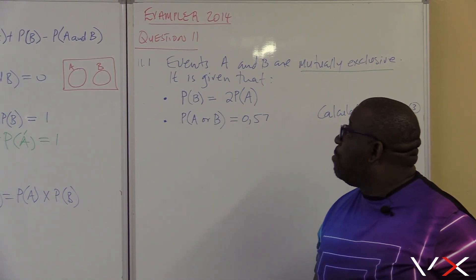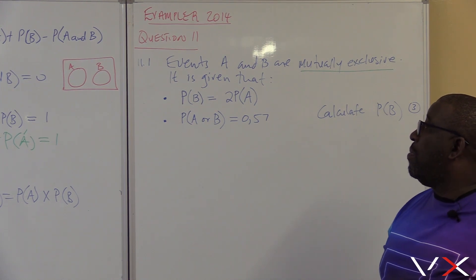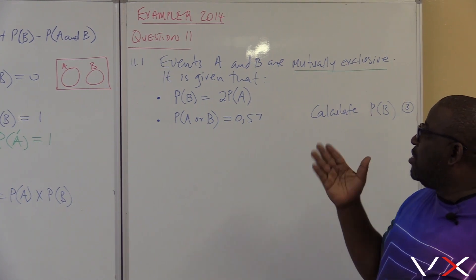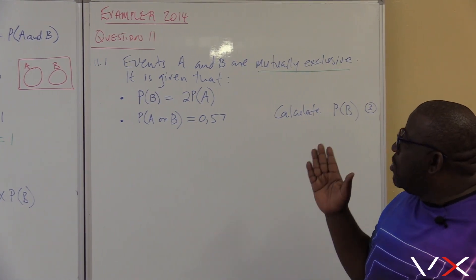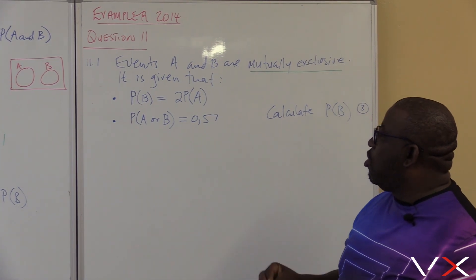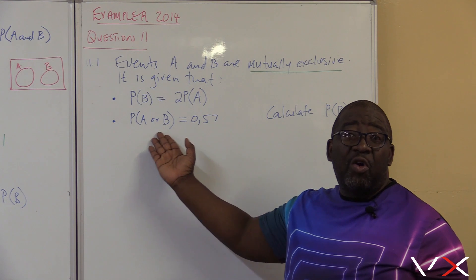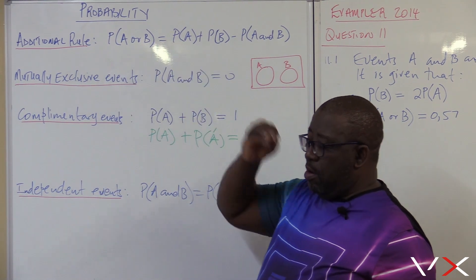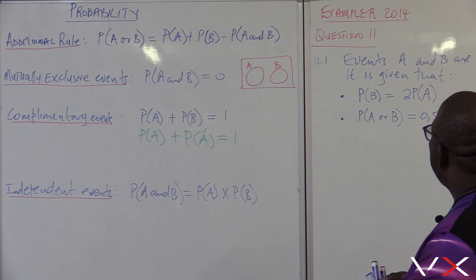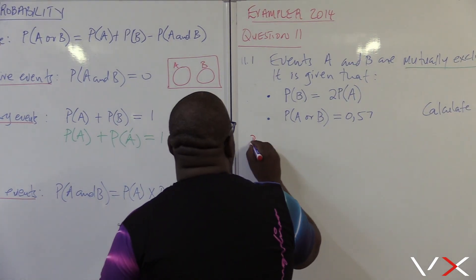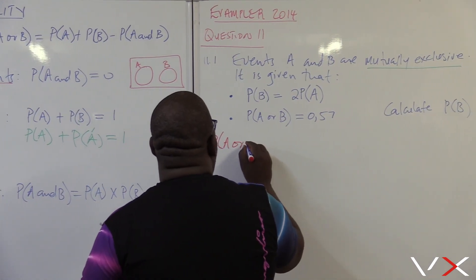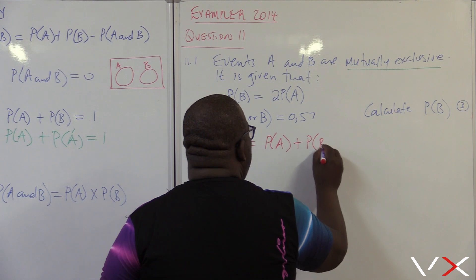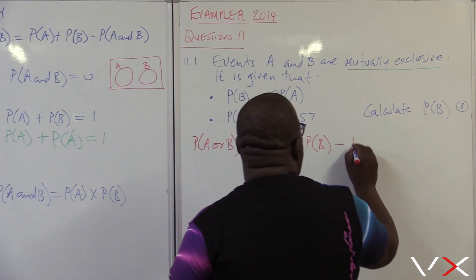We're given that probability of B is equal to 2 times probability of A — you can express one in terms of the other. Probability of A or B is equal to 0.57. Where do we see probability of A or B? In the addition rule. Let's write our formula down: probability of A or B equals probability of A plus probability of B minus probability of A and B.